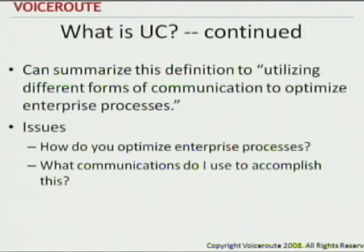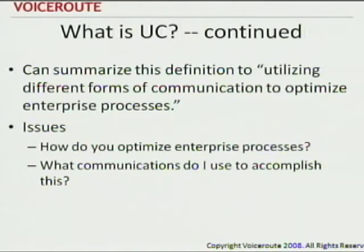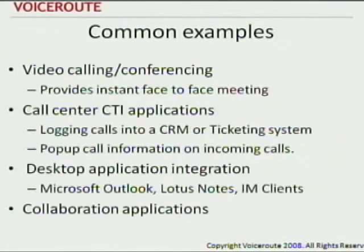And this one here: the largest single value of UC is in its ability to reduce human latency in business processes. Both of these definitions are way too confusing for me. So I kind of like to summarize it to this one: utilizing different forms of communications to optimize enterprise processes — any business function, completing a sale, meeting with a partner, or anything like that.